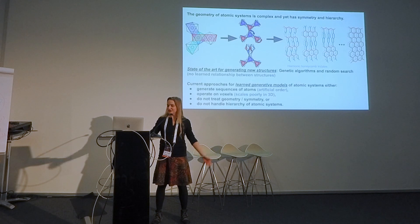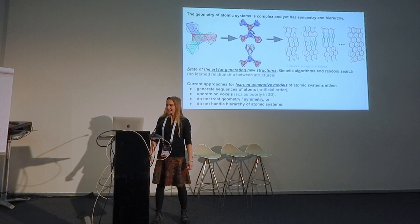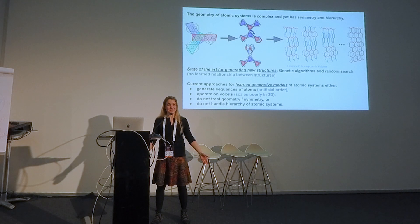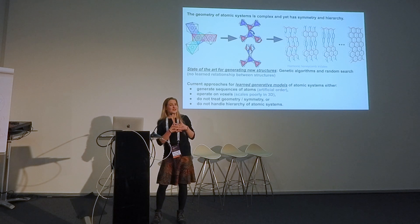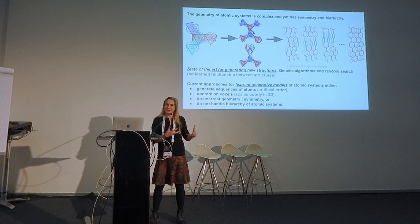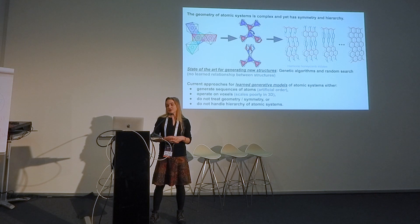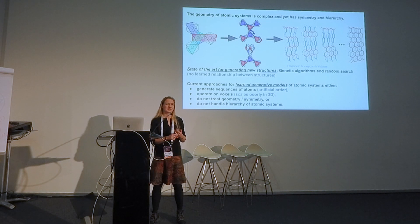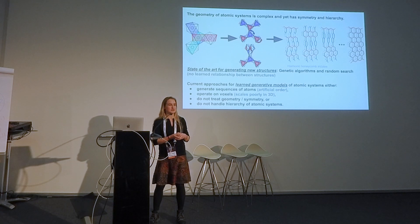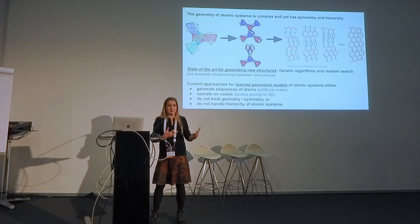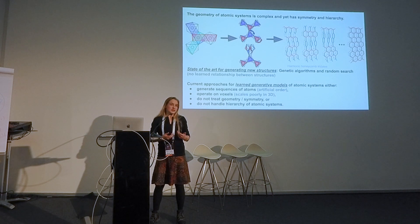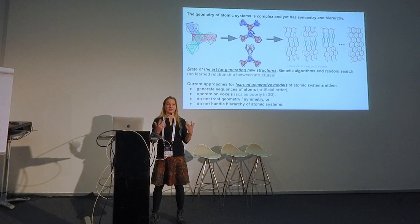If we want to make new structures, the state of the art for generating new atomic structures are genetic algorithms and random search. They're quite effective, especially for high pressure phases, and good at making structures. But there's no learned representation between structures, which is disappointing because as a physicist I have a strong intuition for what things are related. Current approaches either generate atoms sequence by sequence — which for molecules makes some sense, but is artificial for crystals — or they operate on voxels, which has 3D structure but scales poorly at O(n³).